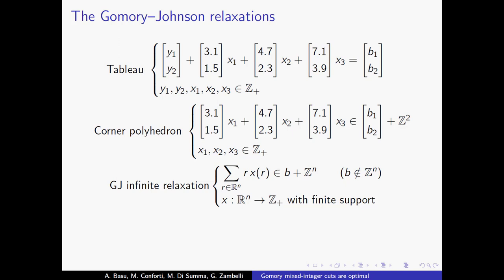To make this infinite summation well-defined, I require the function x to have finite support, meaning it takes nonzero values only on a finite number of elements of its domain — so x is essentially a vector. Once you fix the support, the finite subset of Rⁿ where x takes nonzero values, you fix the columns of the tableau. So once you fix the support you can recover every possible corner polyhedron.